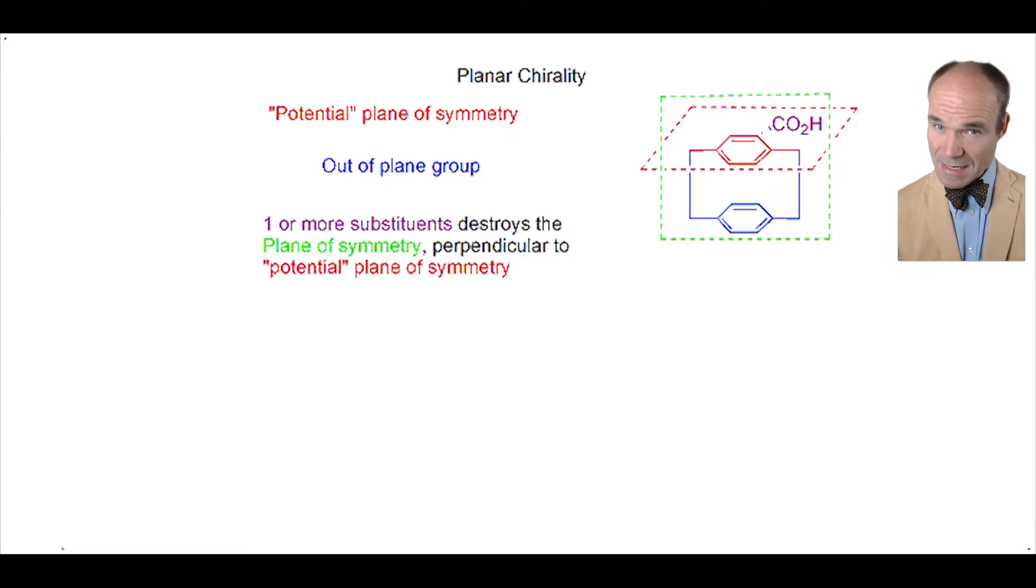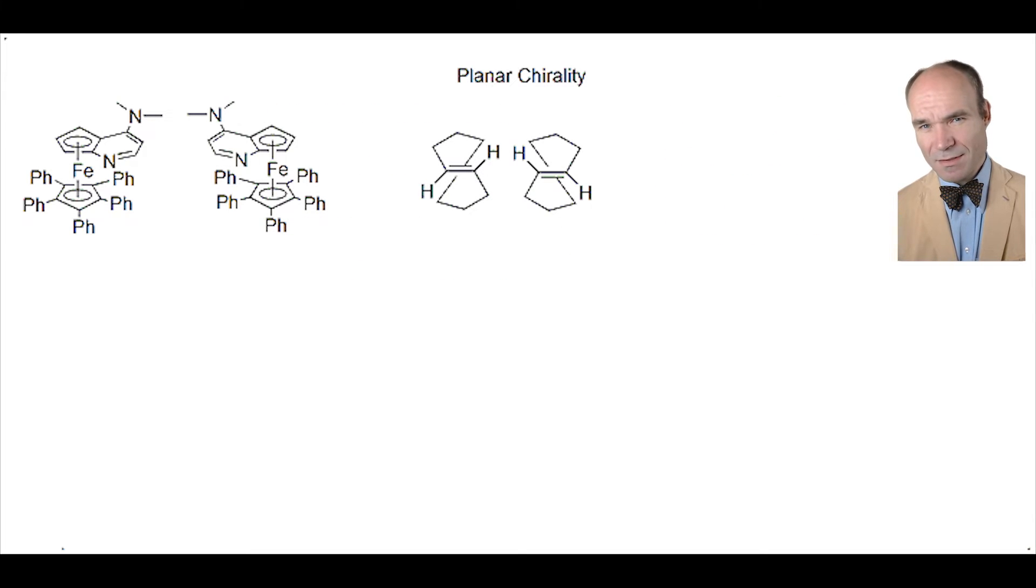Ironically, for planar chirality, you could say that there are two not quite planes of symmetry. As you see with these two examples, there are mirror image forms, thus enantiomers.